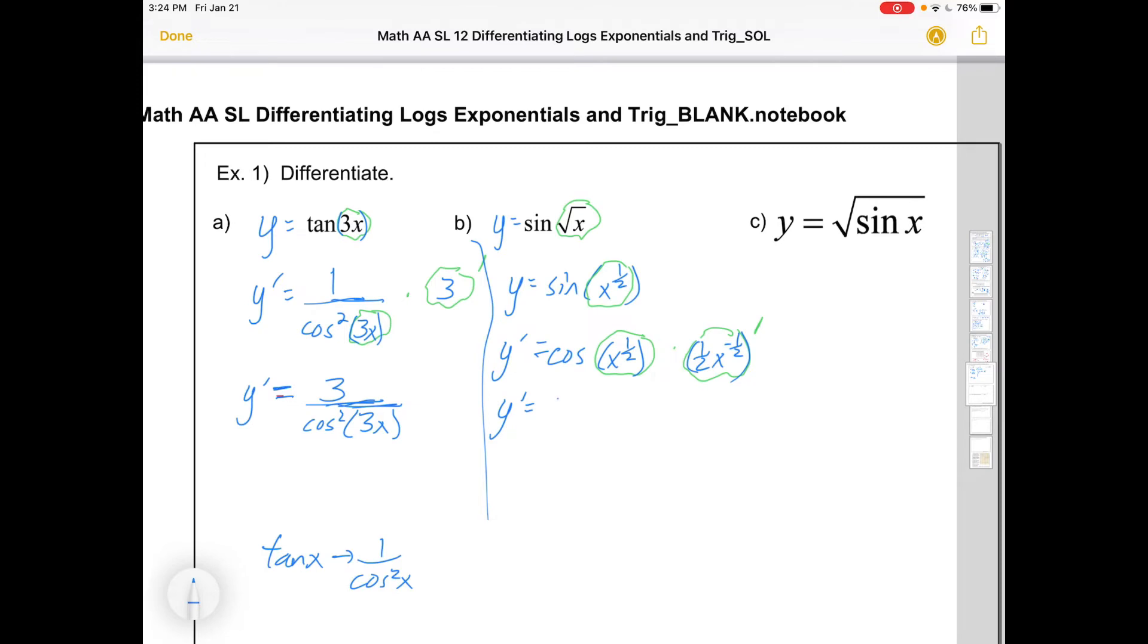And then we could write this in a different order if we really wanted to. Again, we don't multiply by the angle. This one here is the angle. The other stuff kind of acts as coefficients. Or if you wanted to put this back in radical form, that would be cos of root x lives on top, that 2 lives on the bottom, and x to the negative 1 half is a root x that lives on the bottom.